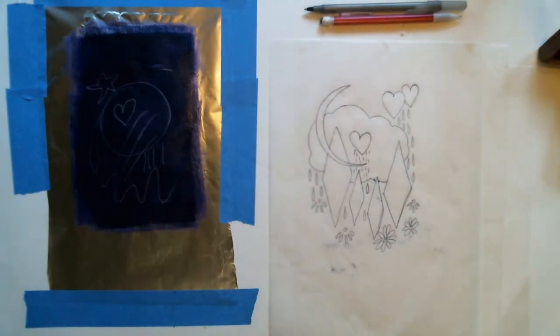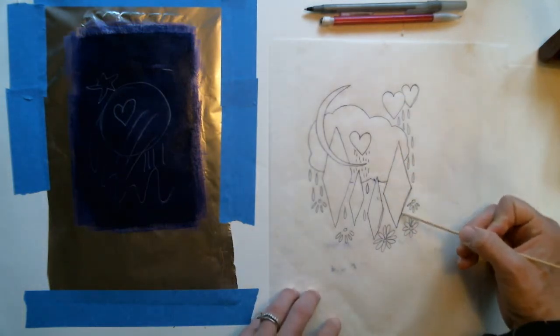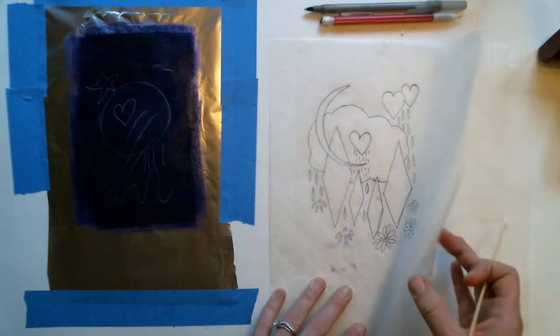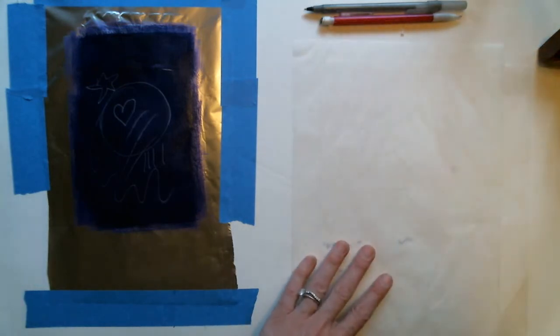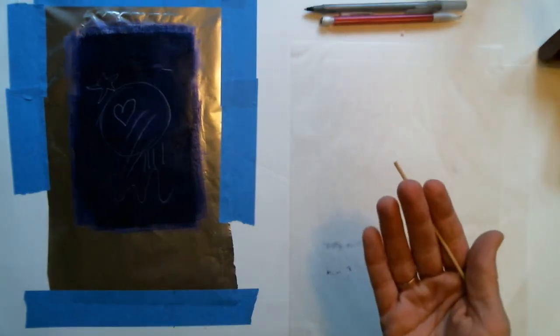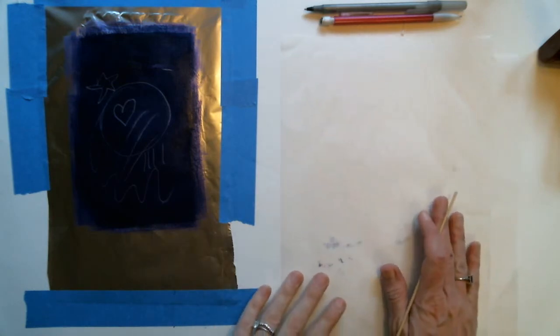However, with my matrix, even though there will be some variation, I've still got the guide that I can reproduce on multiple surfaces. A trace monoprint is called such because you're tracing the image and you're releasing the ink from the inked surface onto your print.